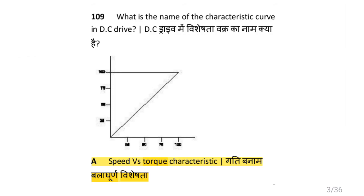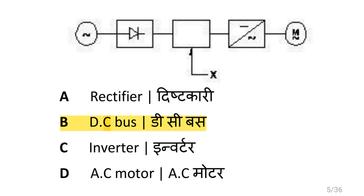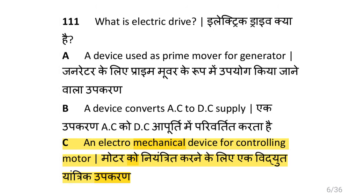What is the name of the characteristics curve in DC drives? That is speed versus torque characteristics. What is the name of the component marked X in the block diagram of AC drives? That is DC bus. What is electric drives? That is an electromechanical device for controlling motor.